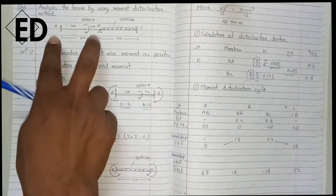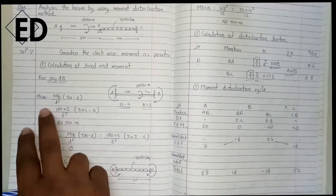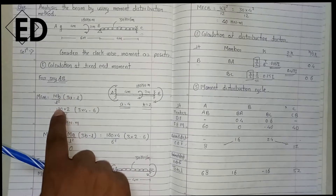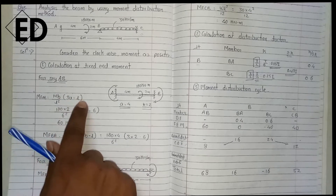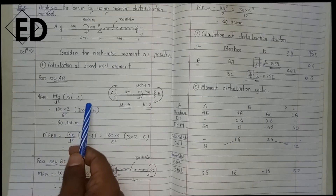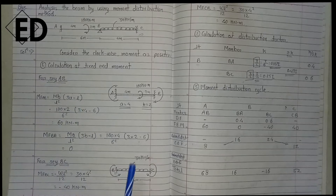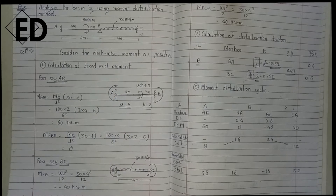We consider the spans AB and BC separately. For span AB, the fixed end moment is MB/L² multiplied by (3a − L). This is the standard formula, and by using it directly we can calculate the fixed end moment at the support.